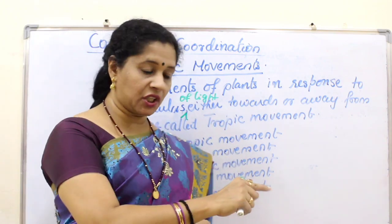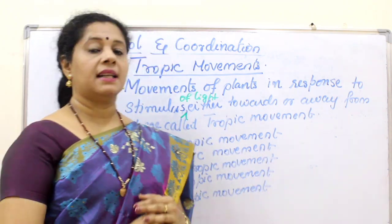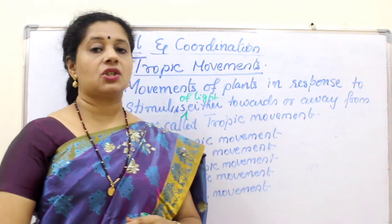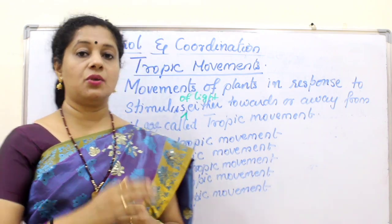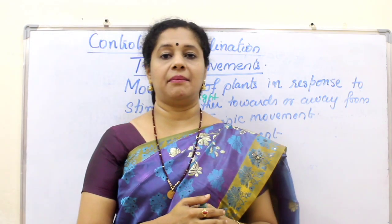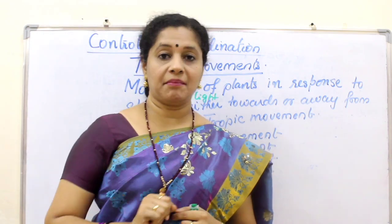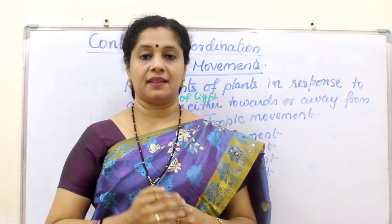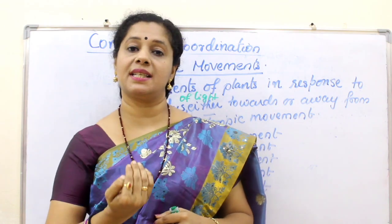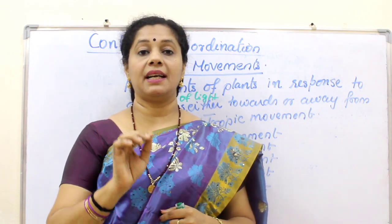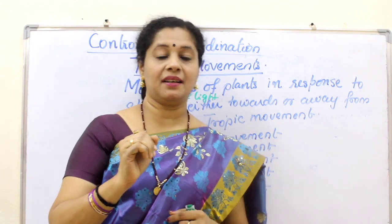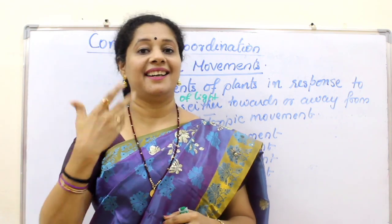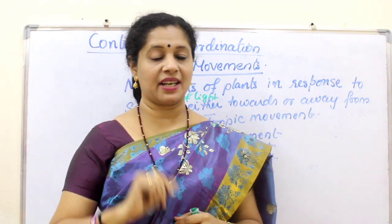Now, if the movement is towards the stimulus, it is called positive. For example, if I call you and you come towards me, that is a positive response. Whereas if I call you and you run away, that is a negative response. Similarly in plants — phototropic movement can be positive or negative. To demonstrate phototropic movement, we can do a small experiment.